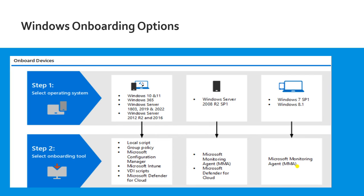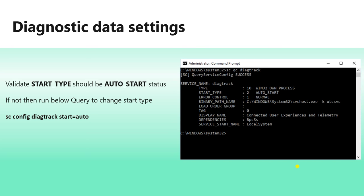In this video we're going to use the Local Script to enroll a Windows 11 device into Defender. Here is the diagnostic data setting — before enrolling any device, you need to check this using the command 'sc qc diagtrack'. The start type should be set to Auto Start. If it is not on Auto Start, you can use the command 'msconfig' to make it Auto Start for your service, and then you can proceed with enrollment.